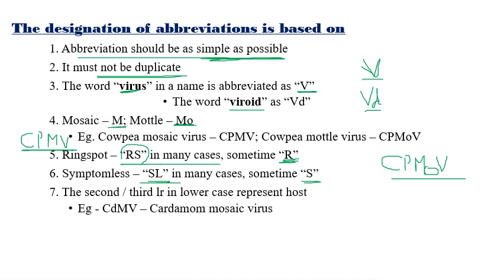The second or third letter in lowercase represents the host. For example, CDMV stands for Cardamom mosaic virus — 'cd' represents cardamom, the host; 'M' for mosaic; 'V' for virus. Remember: if the second or third letter is in lowercase, it represents the host organism.